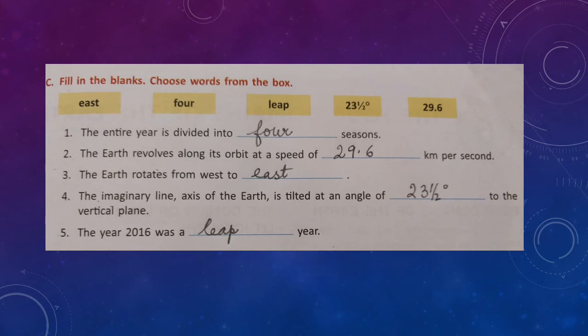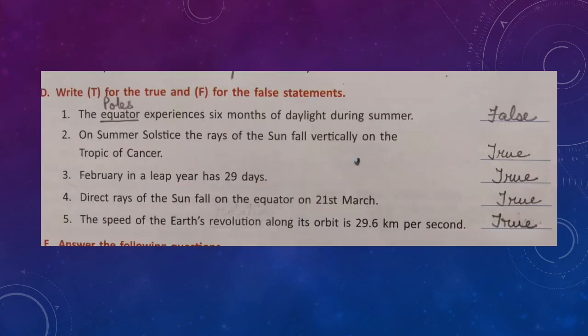Number 3: the earth rotates from west to east. Number 4: the imaginary axis of the earth is tilted at an angle of 23 and a half degrees to the vertical plane. Number 5: the year 2016 was a leap year.